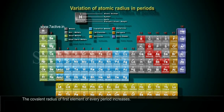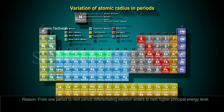The covalent radii of the first element of every period increases. Reason: From one period to next period, differentiating electron enters to next higher principal energy level.